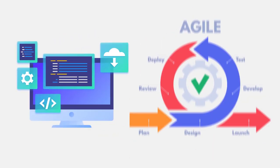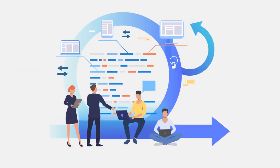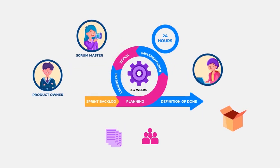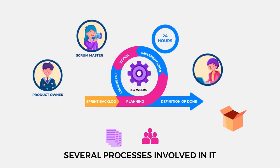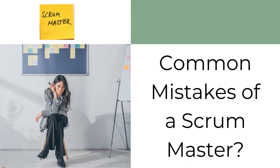Organizations are moving towards Agile methodology from traditional software development methodologies. When you say Agile methodology, the first thing you think of is Agile Scrum. The term Scrum is mainly based on Agile, and there are several processes involved in it. A Scrum Master is a professional in Scrum. In this video, we will understand the most common mistakes that Scrum Masters make and how to overcome them.